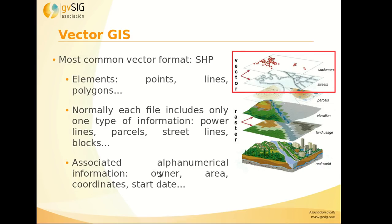The alphanumerical information associated with a shapefile is very different from CAD. In a shapefile we can have the owner, the area, the coordinates of the points, the start date — everything we want.